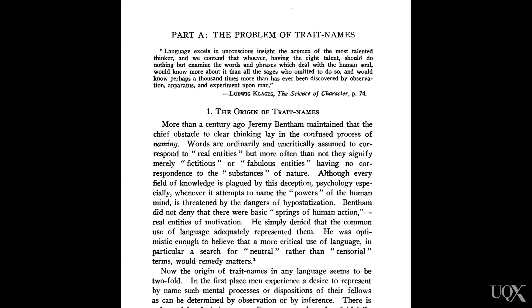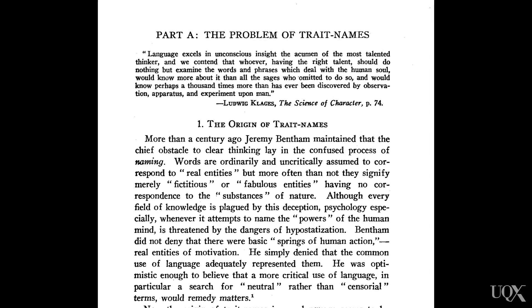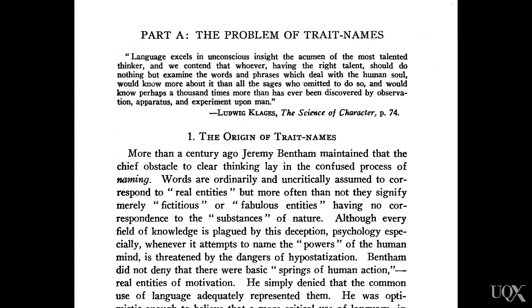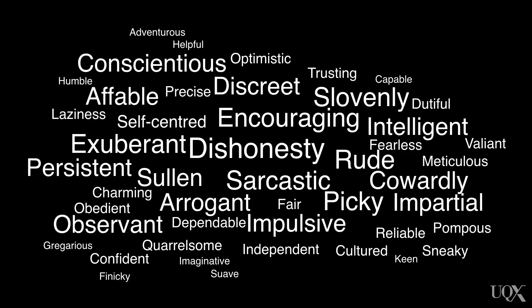Allport and Odbert in 1936 found 18,000 words from dictionaries describing aspects of personality, and identified around 4,000 words for temporary states and social evaluations. You can then give people a questionnaire and ask them to indicate how many of those words apply to them.